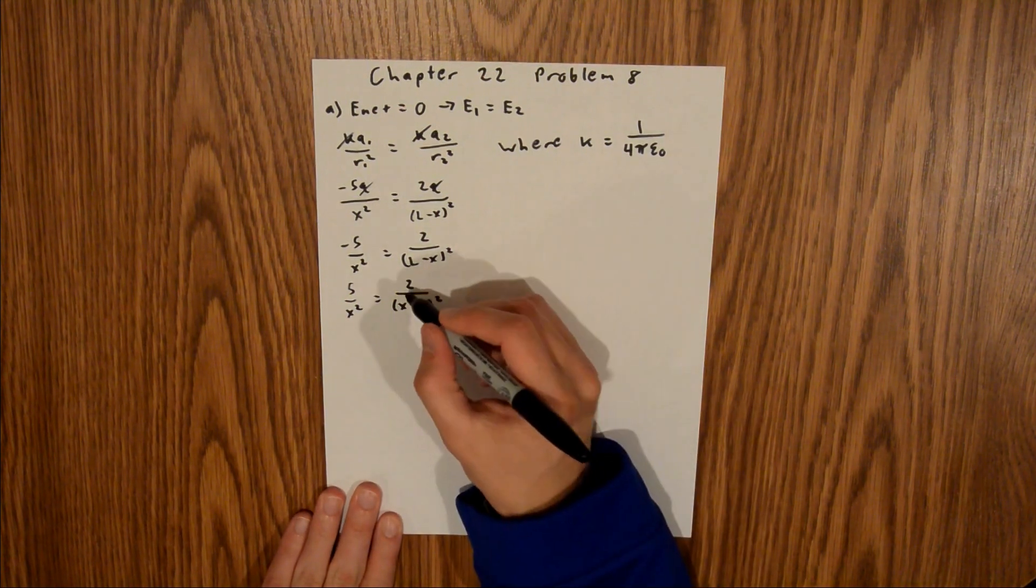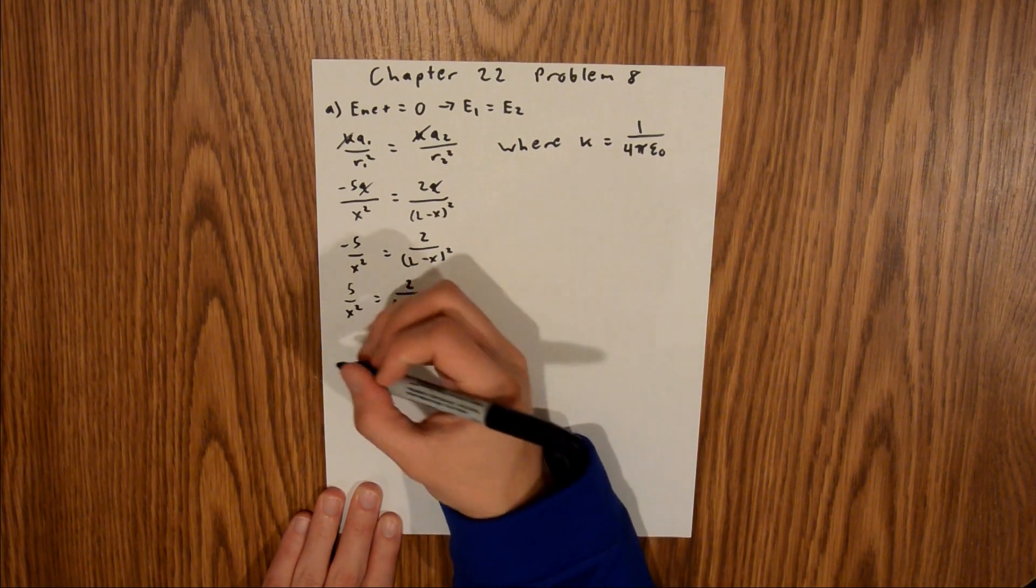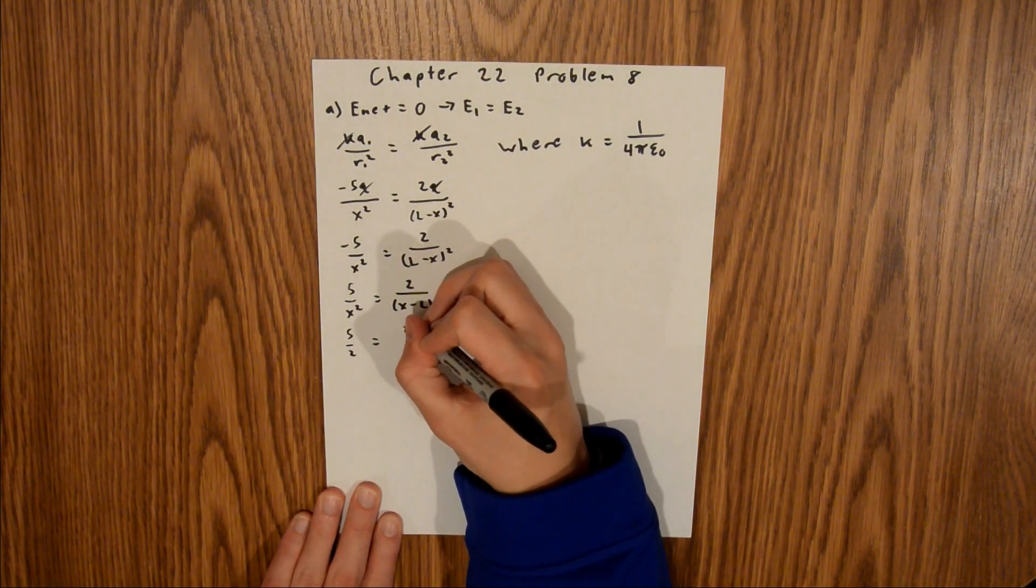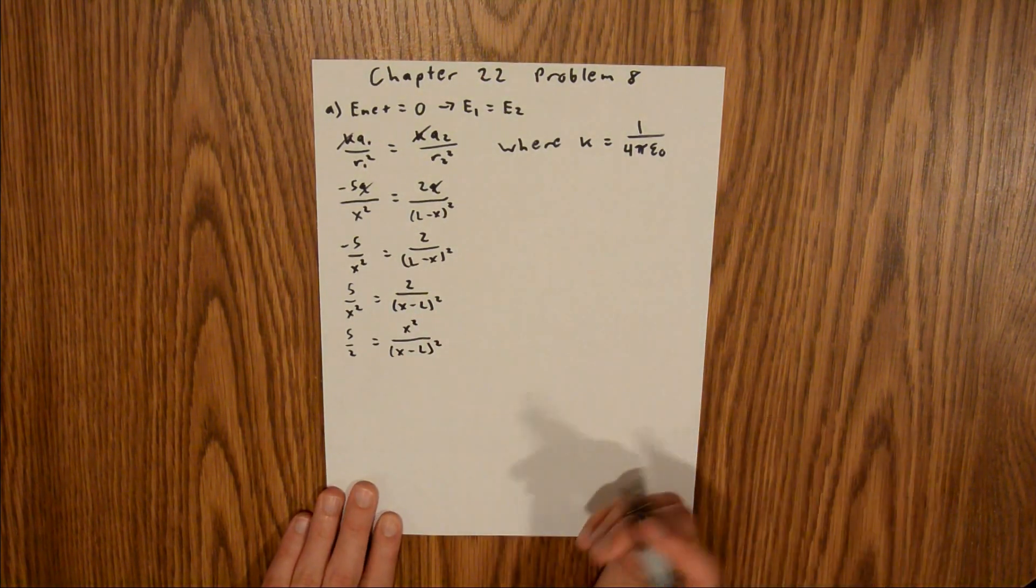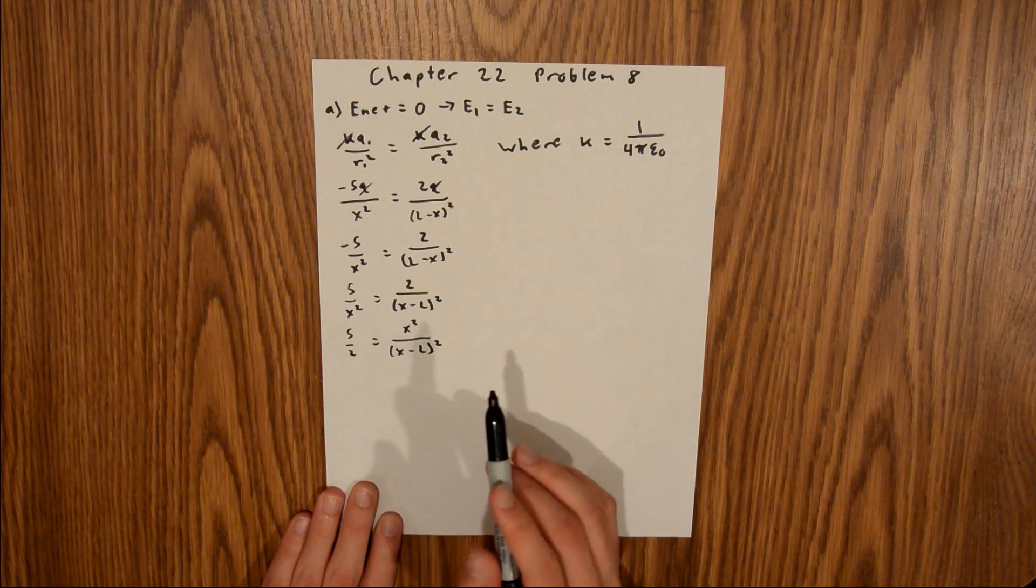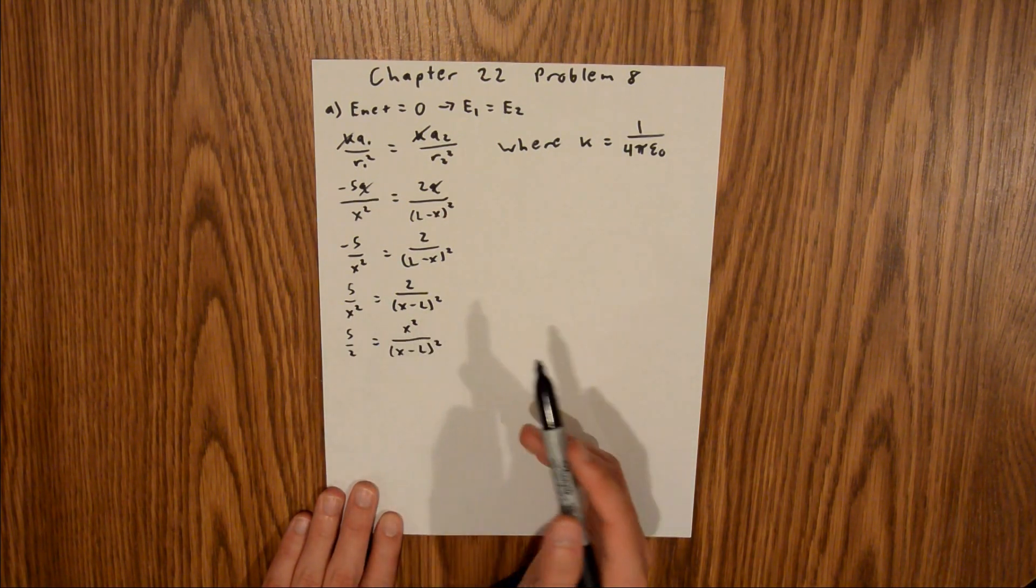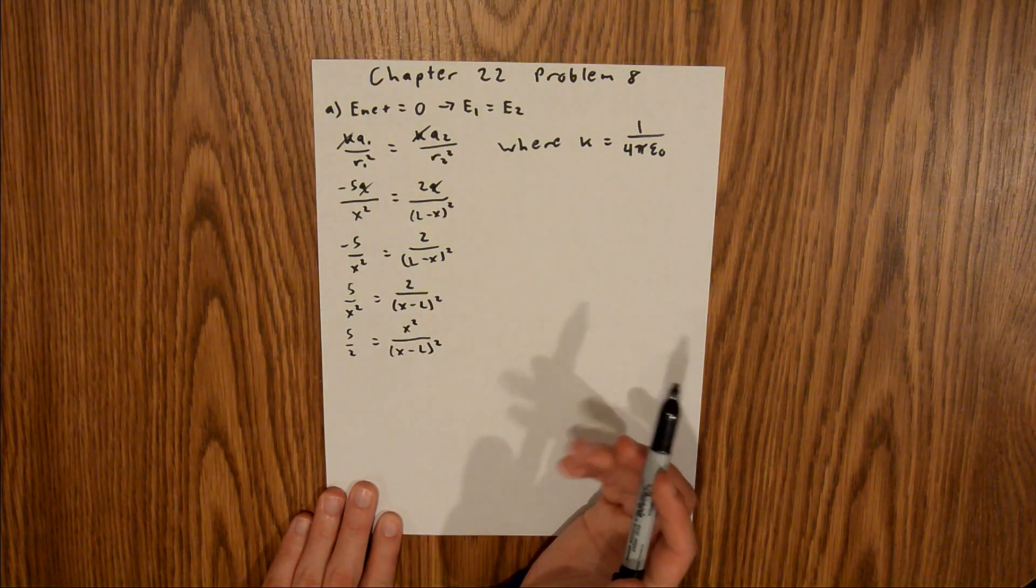And so now what we can do is divide both sides by 2 and then multiply both sides by x squared, and so that's going to leave us with 5 over 2 is equal to x squared over x minus l squared. And so this is why I moved that negative, because now you would have had a negative 5 halves, and I want to take the square root of both sides, and I can't take the square root of a negative number unless I want to introduce complex numbers, and I really do not want to do that.